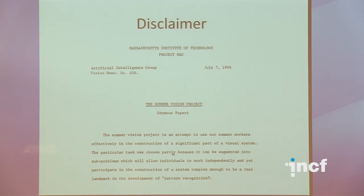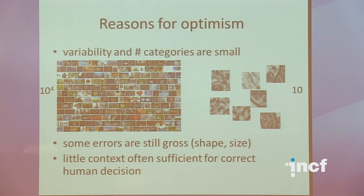Now I'll talk about the future. Prediction is hard, especially about the future — that's disclaimer one. Disclaimer two: people always get the difficulty of computer vision questions wrong, partly because we do it so effortlessly thanks to millions of years of evolution — we open our eyes and can't help parsing everything we see. Even people who should know better keep making this mistake; the classic example is Seymour Papert's 1966 summer project proposing to solve a large part of computer vision in a single summer.